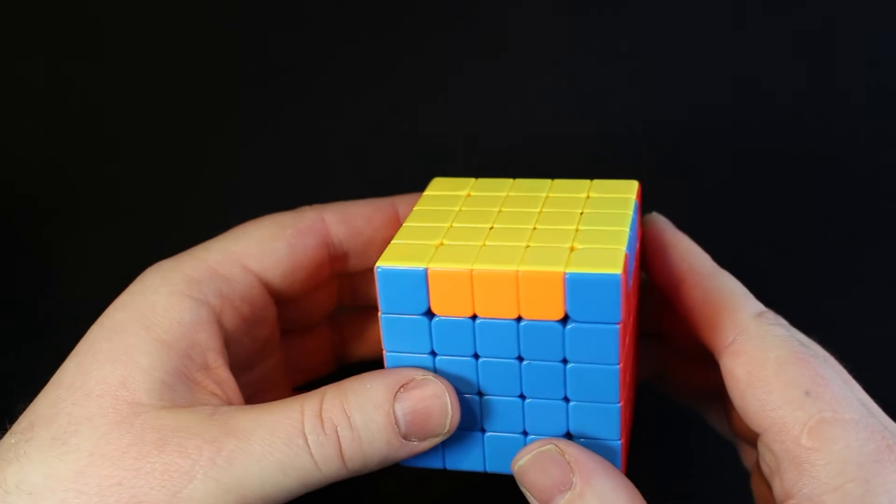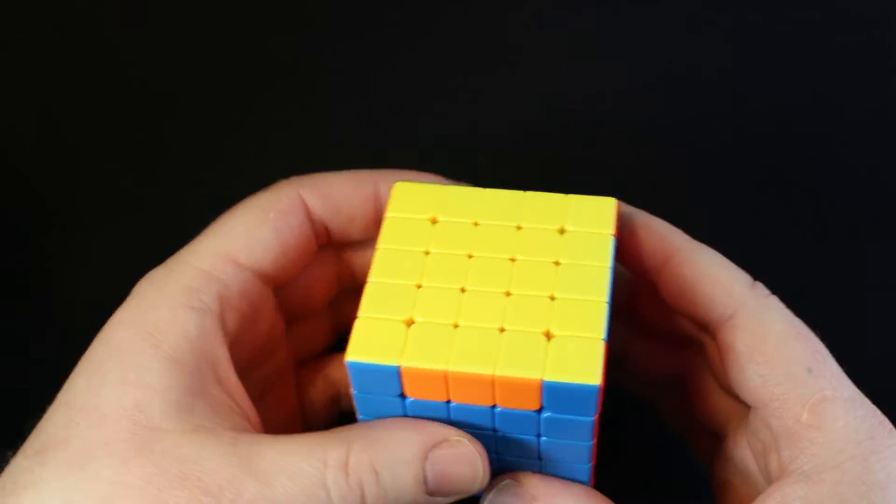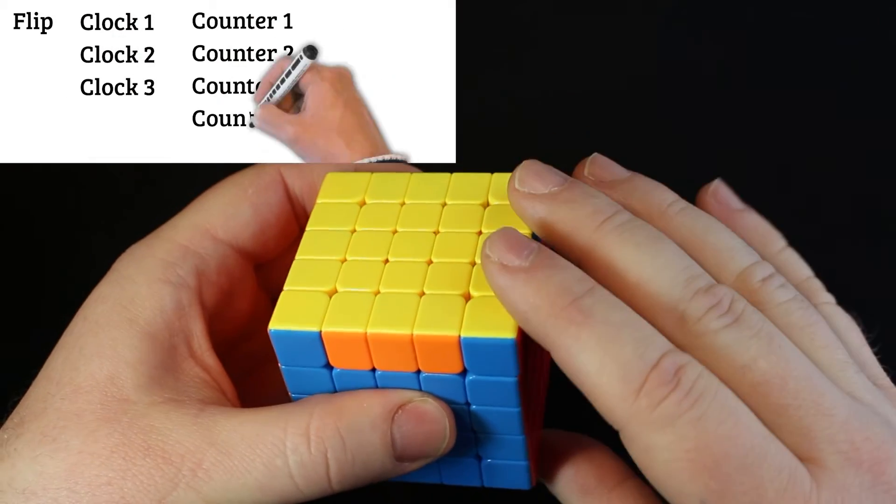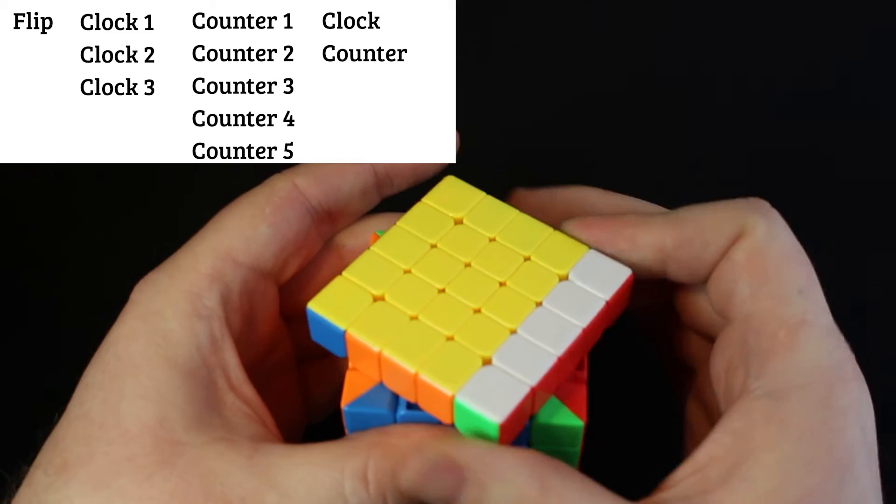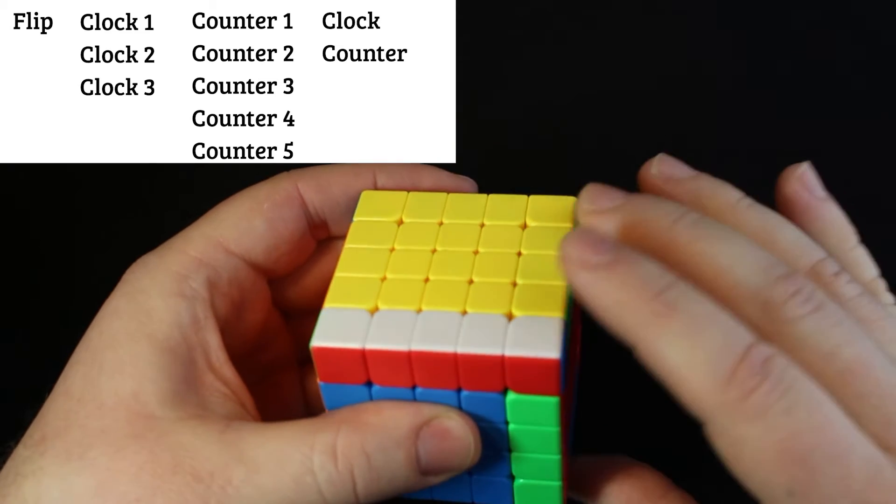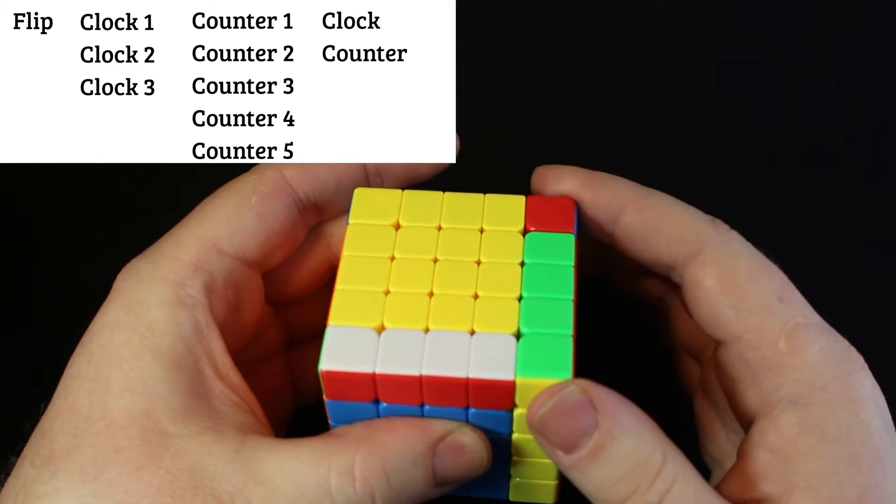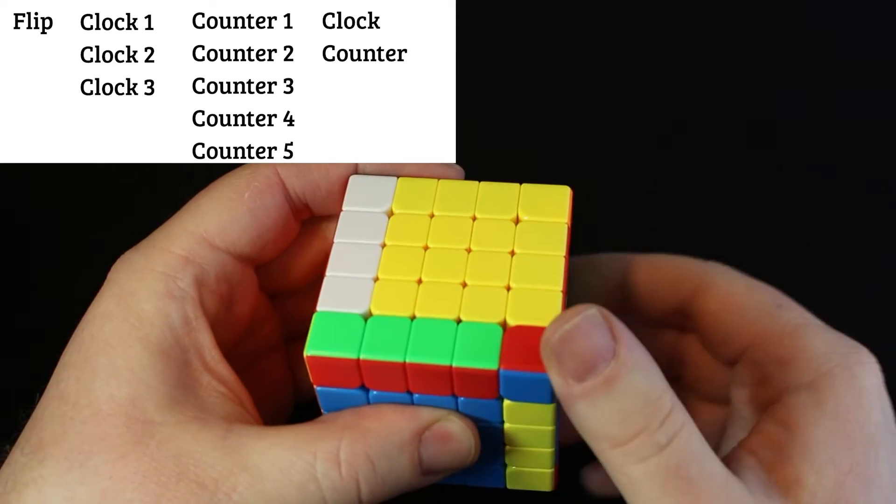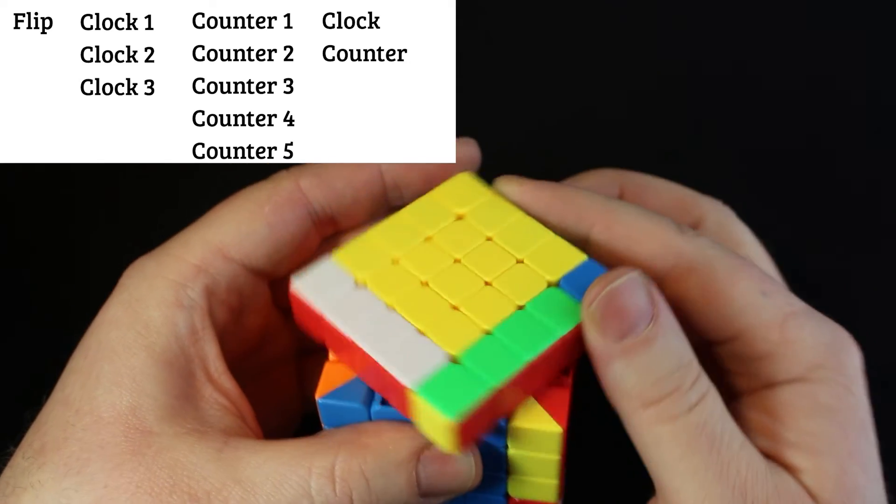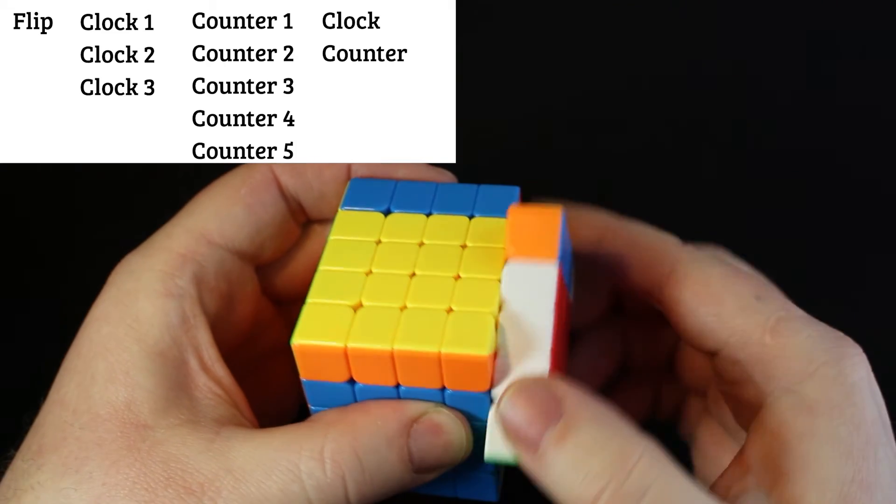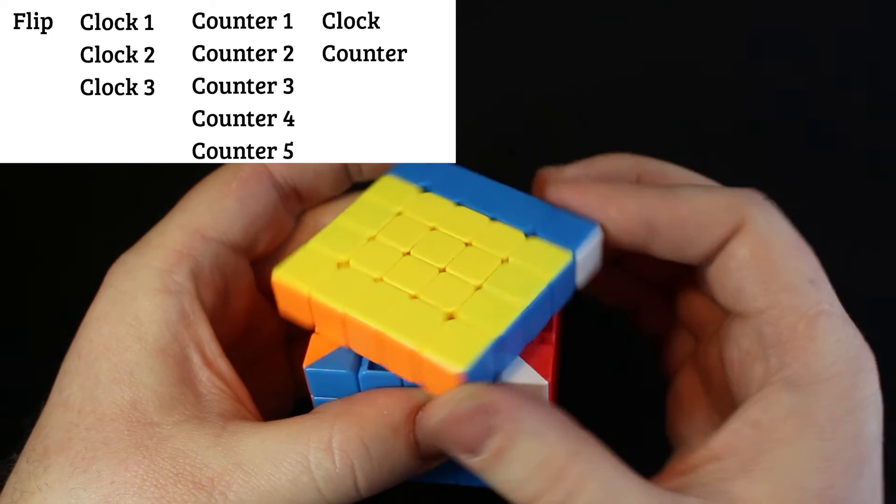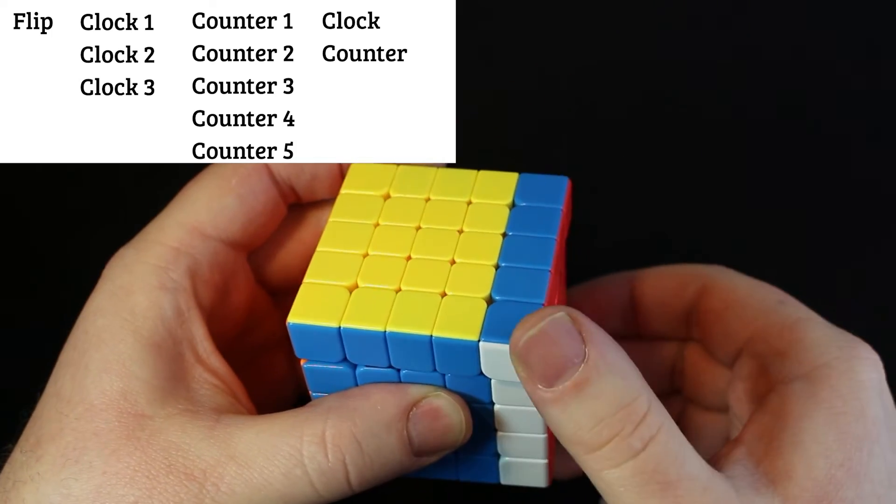So we should be able to solve this one time. Let's go and do that. And this is just right top. So using those moves, flip, clock one, clock two, clock three, counter one, counter two, counter three, counter four, counter five, clock, counter.